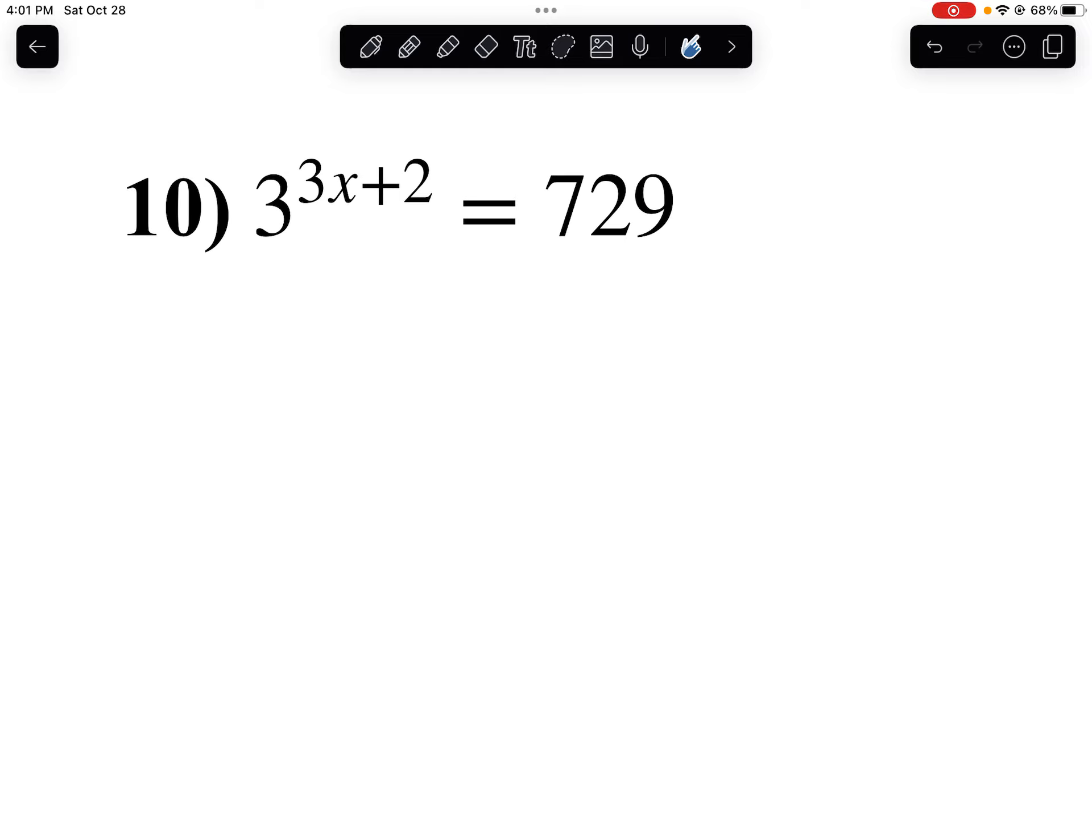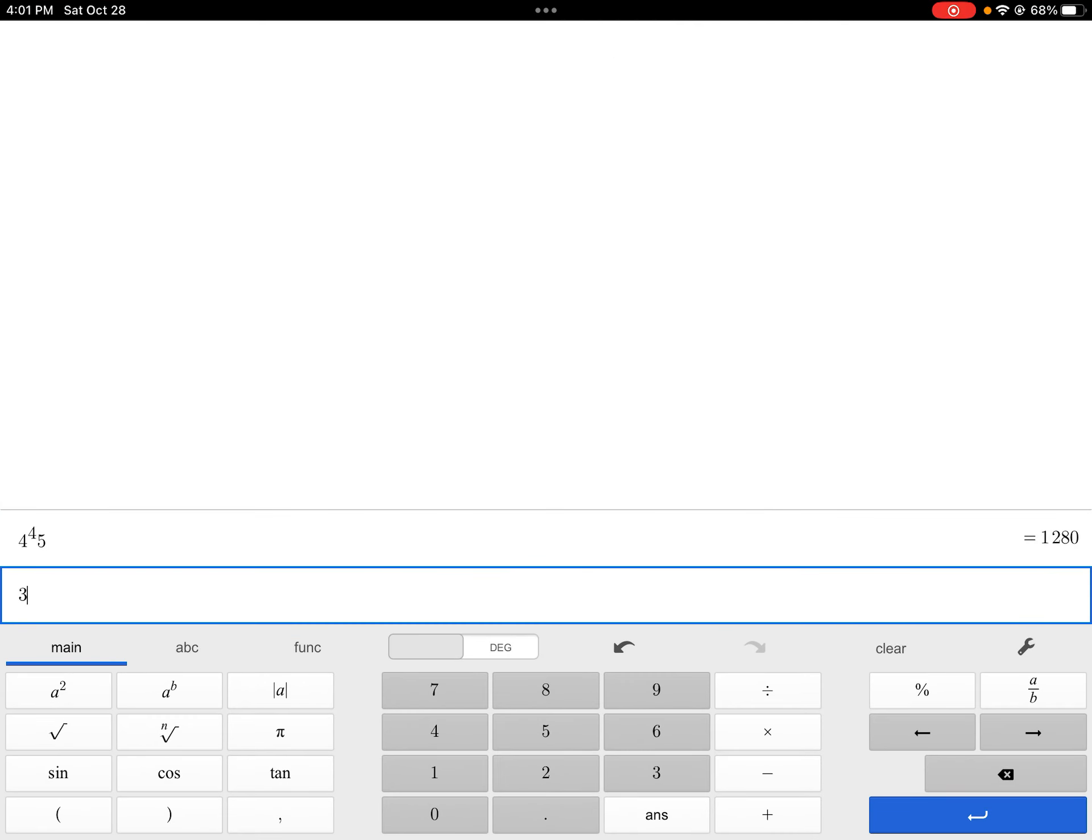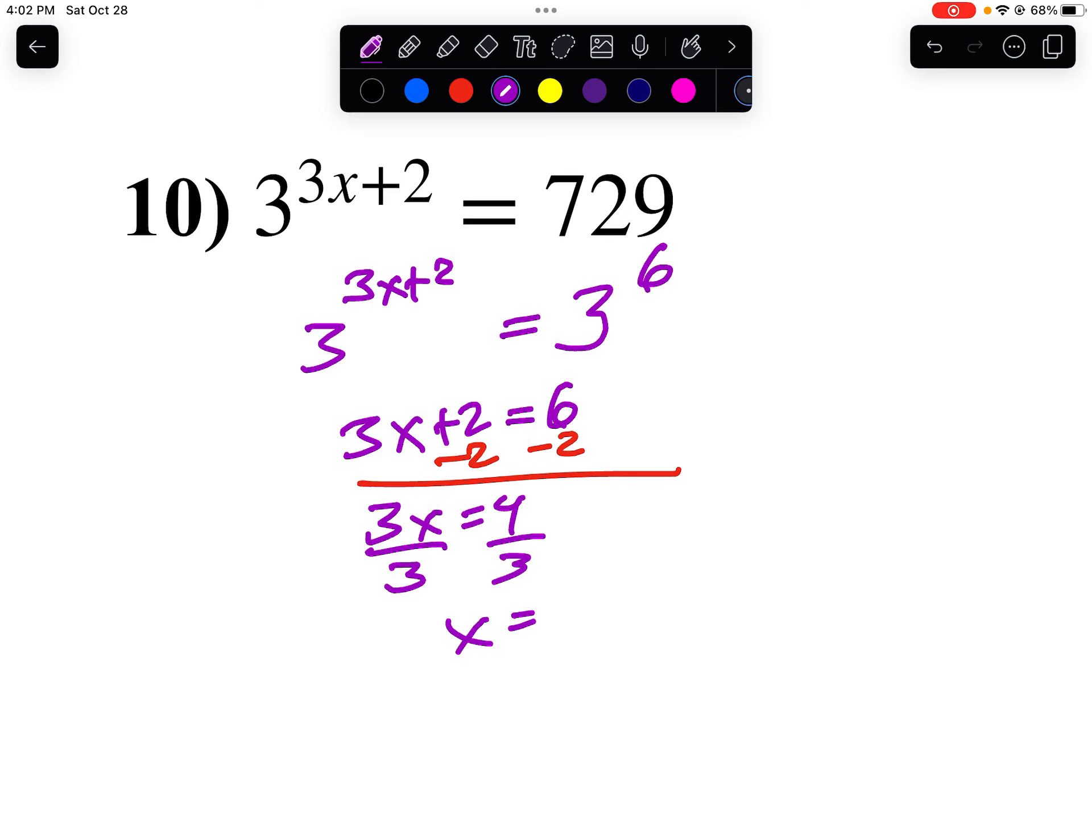Let's take a look at number 10. Can I write 729 as a power of 3? I'm going to have to do a few guesses and check-ins here. So if I go 3 to the 5th power, that's 243. How about 3 to the 6th power? There we go. It's 3 to the 6th. So this is 3 to the 6th equals 3 to the 3x plus 2. My 3s are the same. So I say 3x plus 2 equals 6. Let's minus 2 from both sides. 3x equals 4. I'll divide both sides by 3. x equals 4 over 3. And there's my answer to number 10.